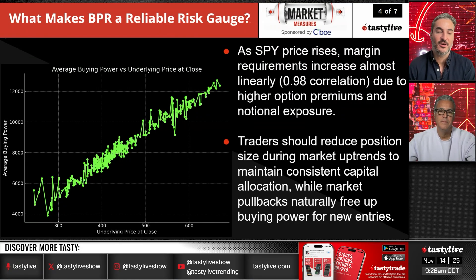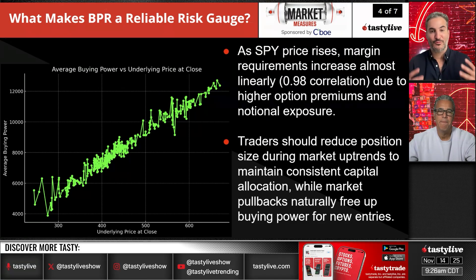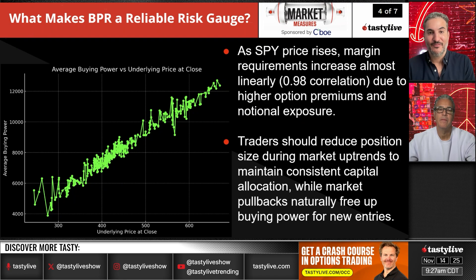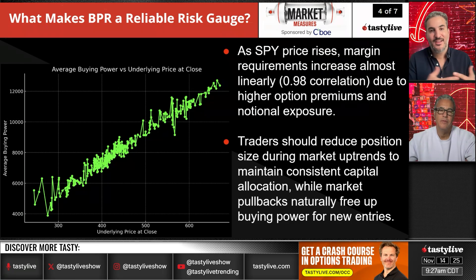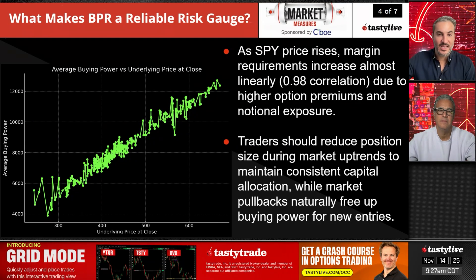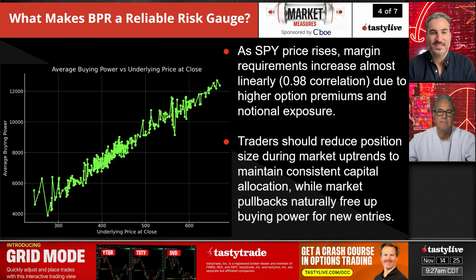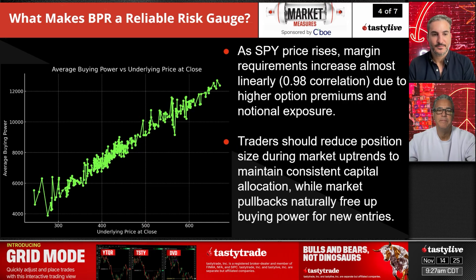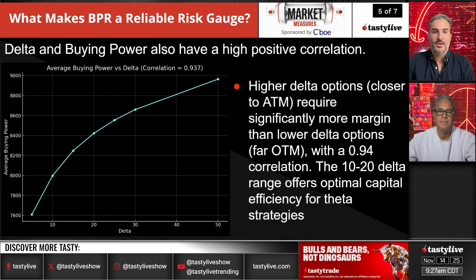Traders should reduce position size during market uptrends to maintain consistent capital allocation, while market pullbacks naturally free up buying power for new entries. As the market goes up, putting on new positions becomes more expensive and harder to hold. We talked about Netflix — you kind of have to be defined risk in those trades because of the price of the asset. Your average buying power increases linearly with market movement.